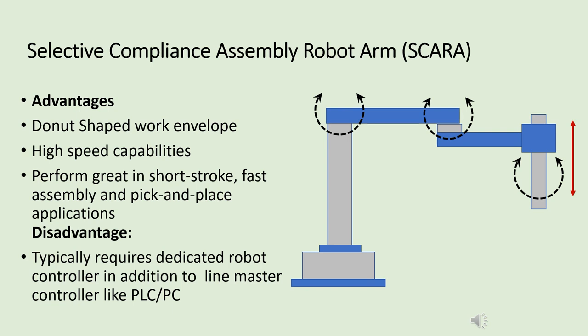The Selective Compliance Assembly Robotic Arm is mostly used for assembly applications. It has a donut-shaped work volume, high speed capabilities, and can perform in short-stroke, fast assembly, and pick-and-place applications. A disadvantage is that it typically requires a dedicated robot controller in addition to a line master controller such as PLCs and personal computers.